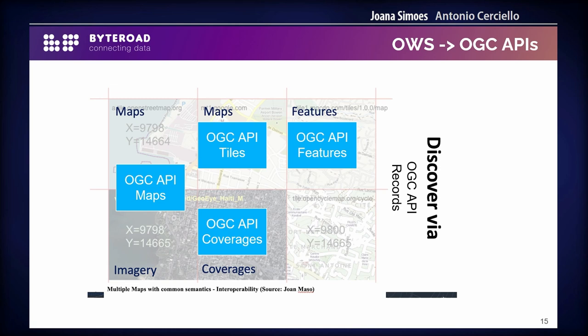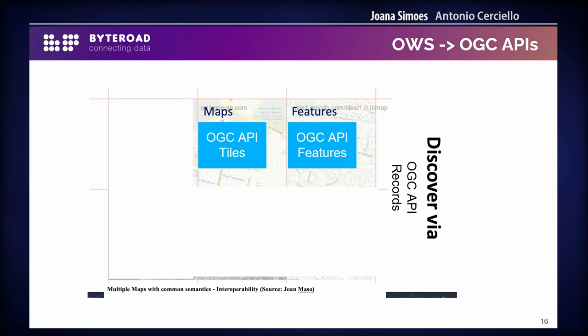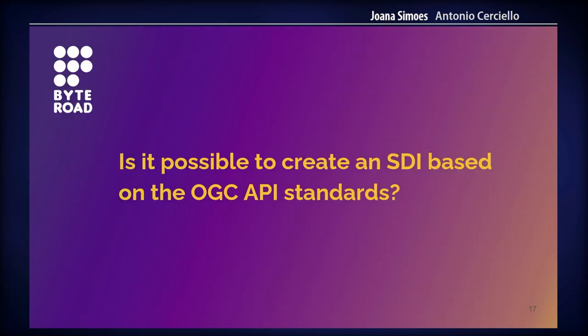In this project, because we have mostly vector data for now, we decided to focus on two standards: OGC API Features and OGC API Tiles, considering that we are using vector tiles. The question we ask ourselves is: is it possible to this day to create already a complete SDI using these new OGC API standards? Do we have the software available, do we have the tools, do we have the knowledge? This is the question that Antonio is going to answer.